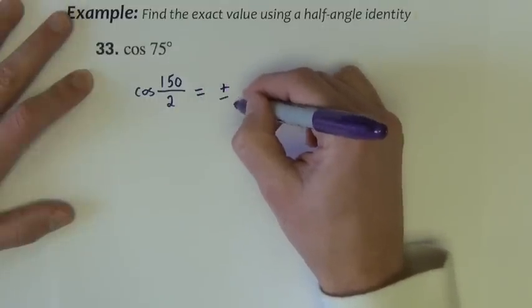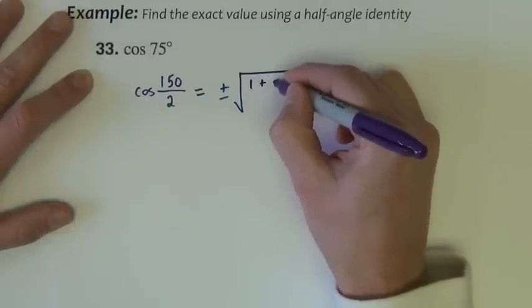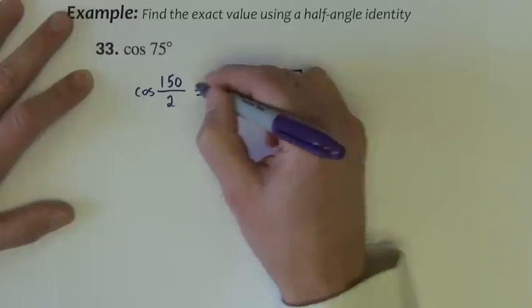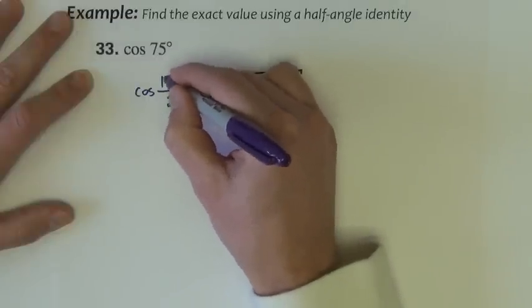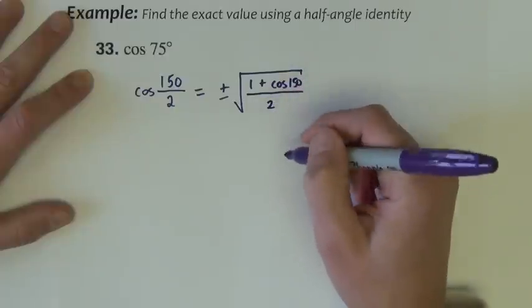Cosine formula is plus minus square root of 1 plus cosine theta. The theta that we use here is the same theta that we've got on top of this fraction. So 150 over 2.